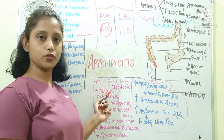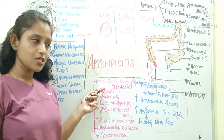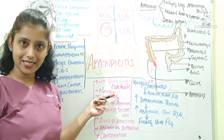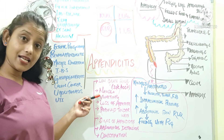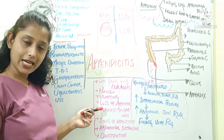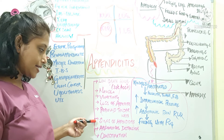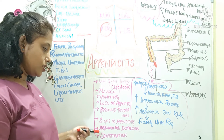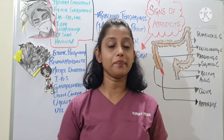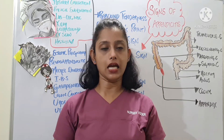Let us see what are the clinical features or symptoms which a patient may experience during acute appendicitis. The first and foremost sign or symptom is low-grade fever, with temperature at 37 degrees Celsius or 100 degrees Fahrenheit. Other than that, there will be nausea, vomiting, loss of appetite, rebound tenderness, signs of appendicitis, abdominal distension, and constipation.